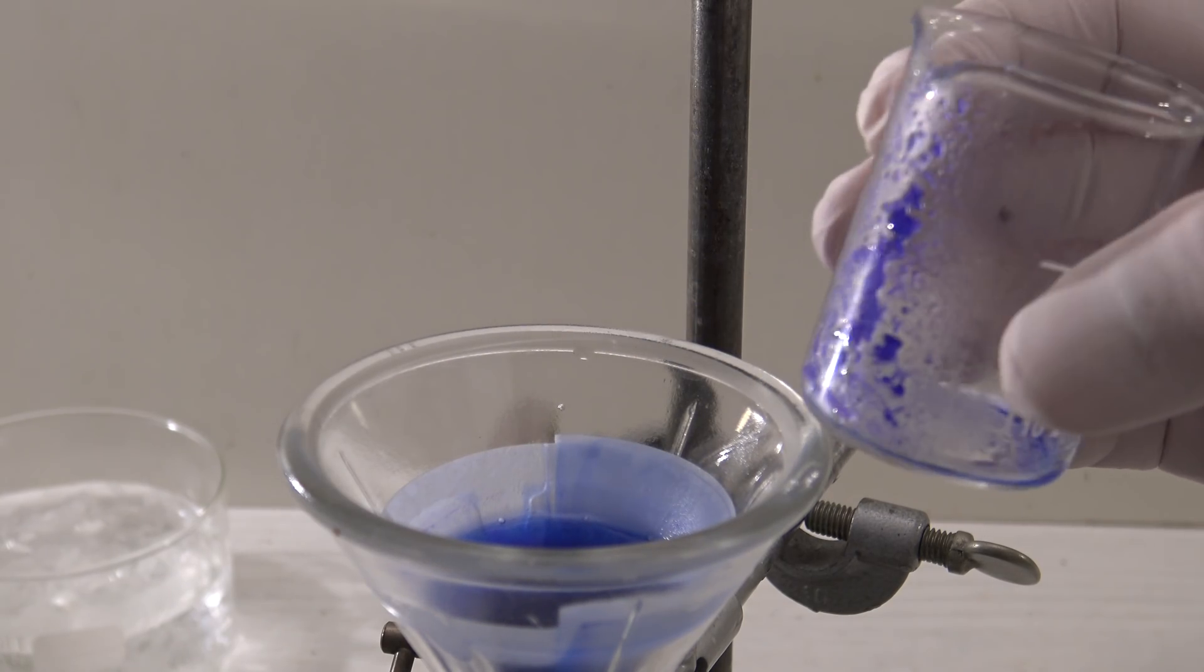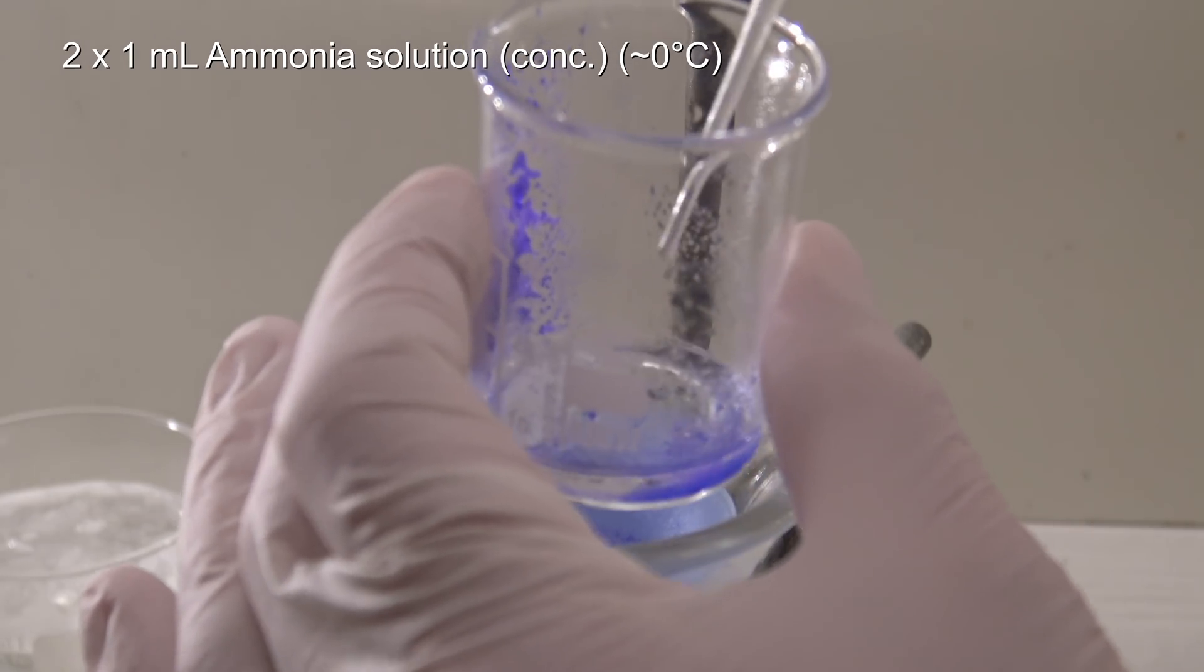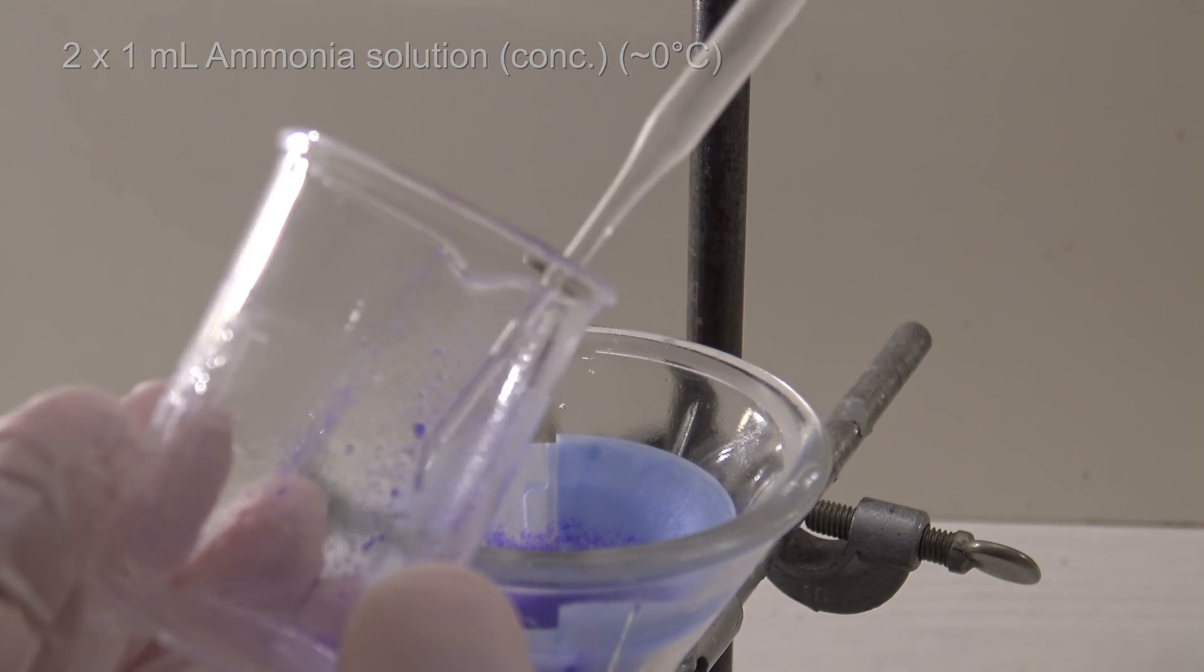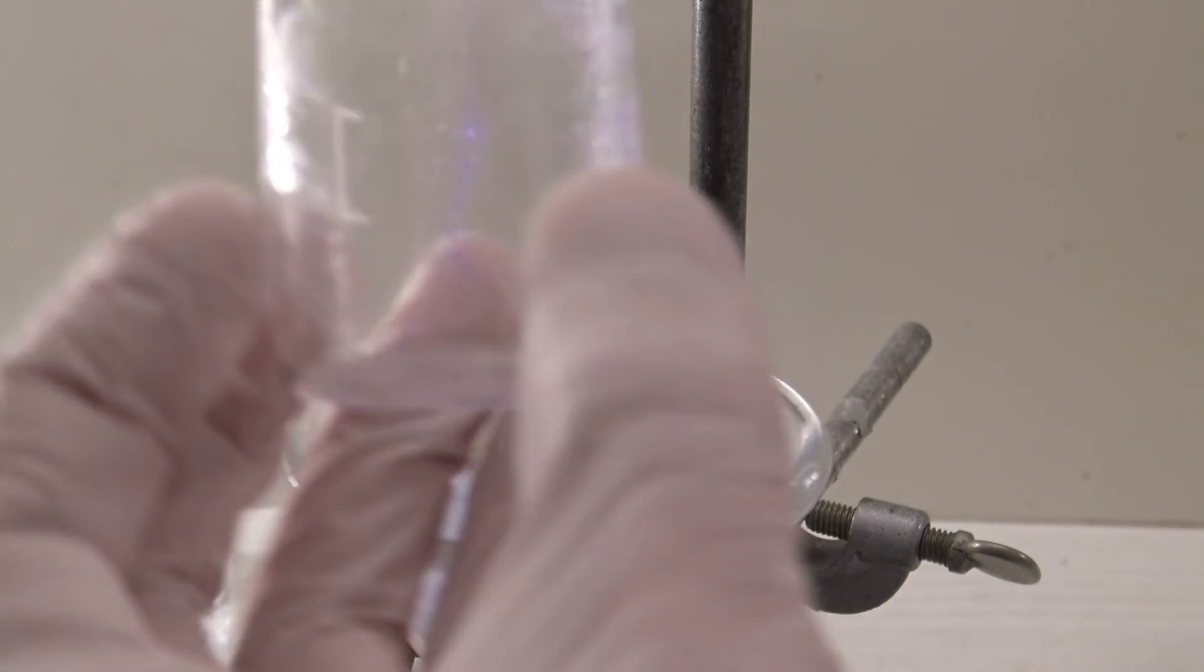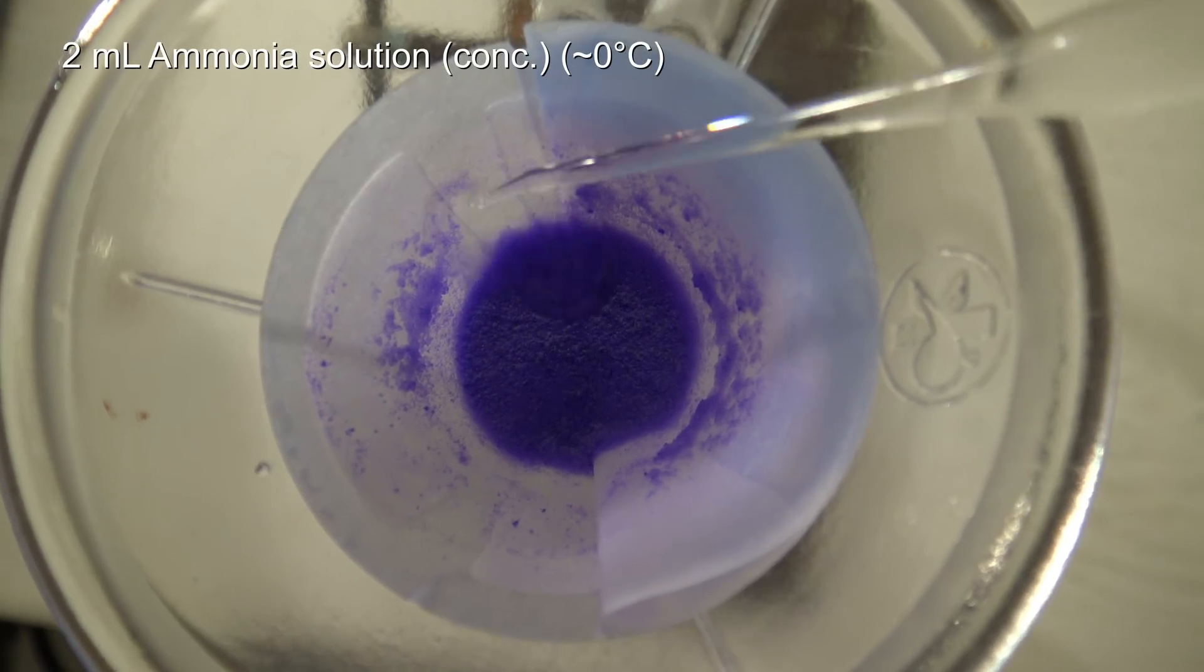The residue in the beaker was washed out two times with one milliliter of concentrated ice-cold ammonia solution. Then, the precipitate was washed again with two milliliters of ice-cold ammonia.